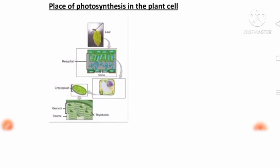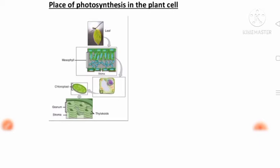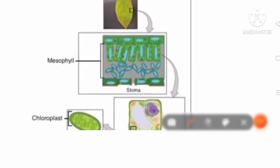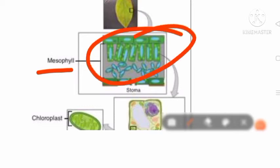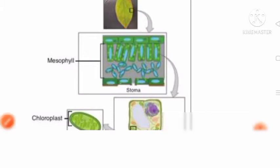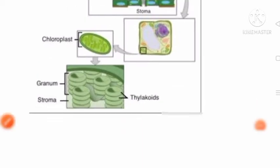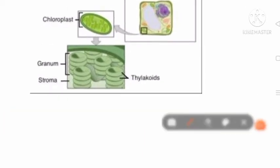Now, the place of photosynthesis in the plant cell. This figure will make it crystal clear. First, we can see the mesophyll cells. Inside the mesophyll cells are green cells — this is the plant cell, and inside this cell is your chloroplast. Inside the chloroplast are coin-like structures called thylakoids, and a stack of thylakoids is called a granum. Chlorophyll molecules are present on the thylakoids.